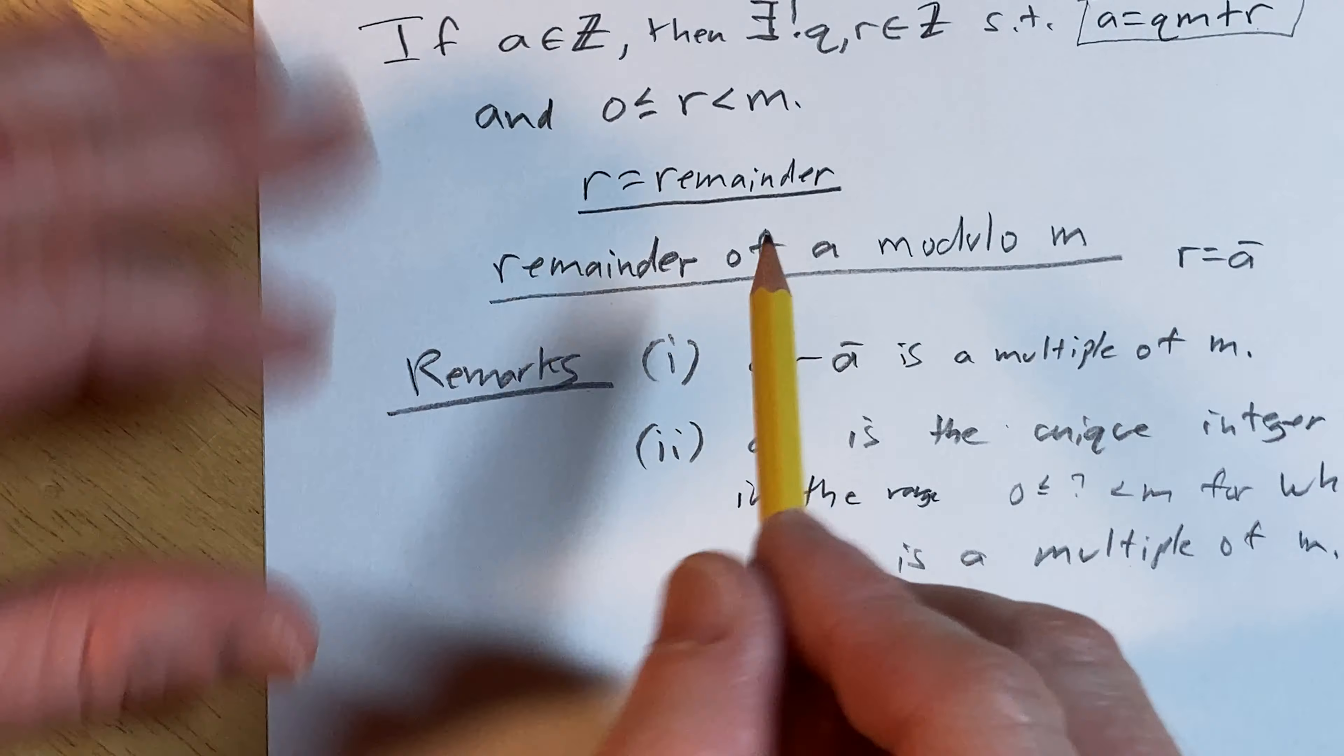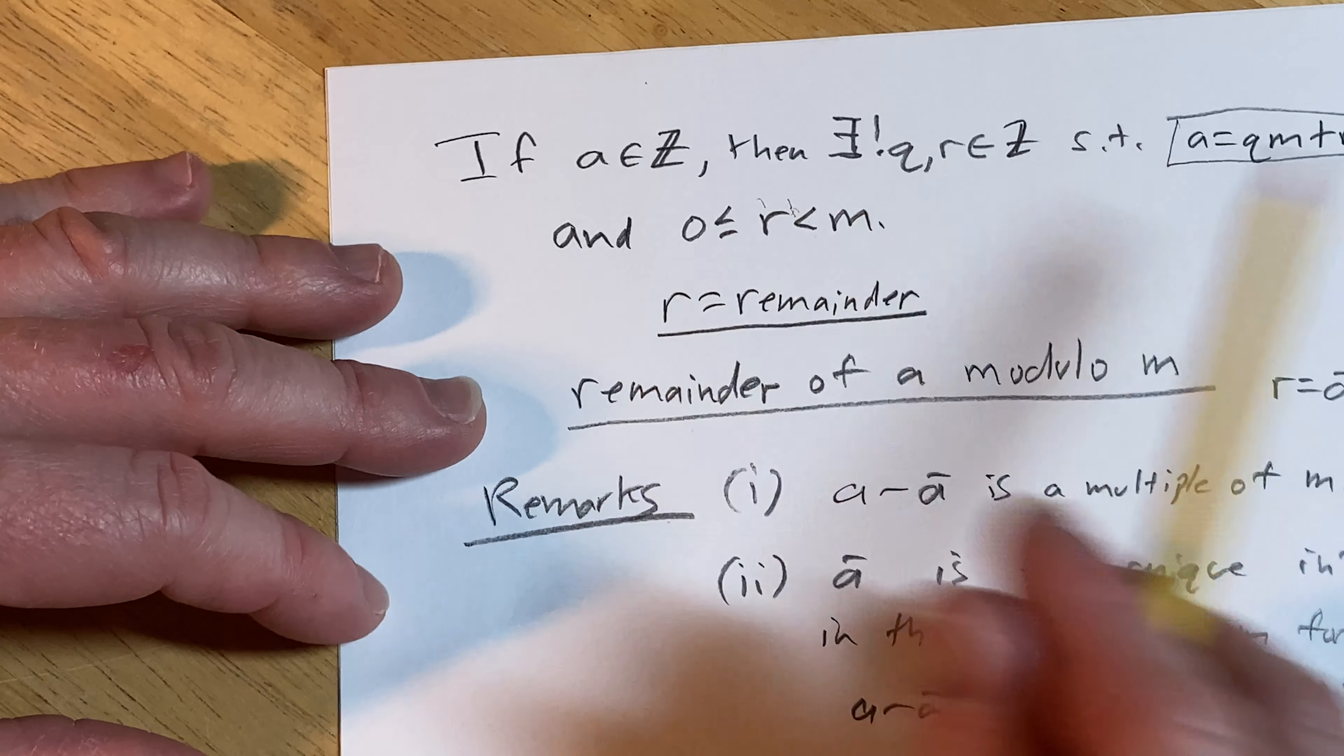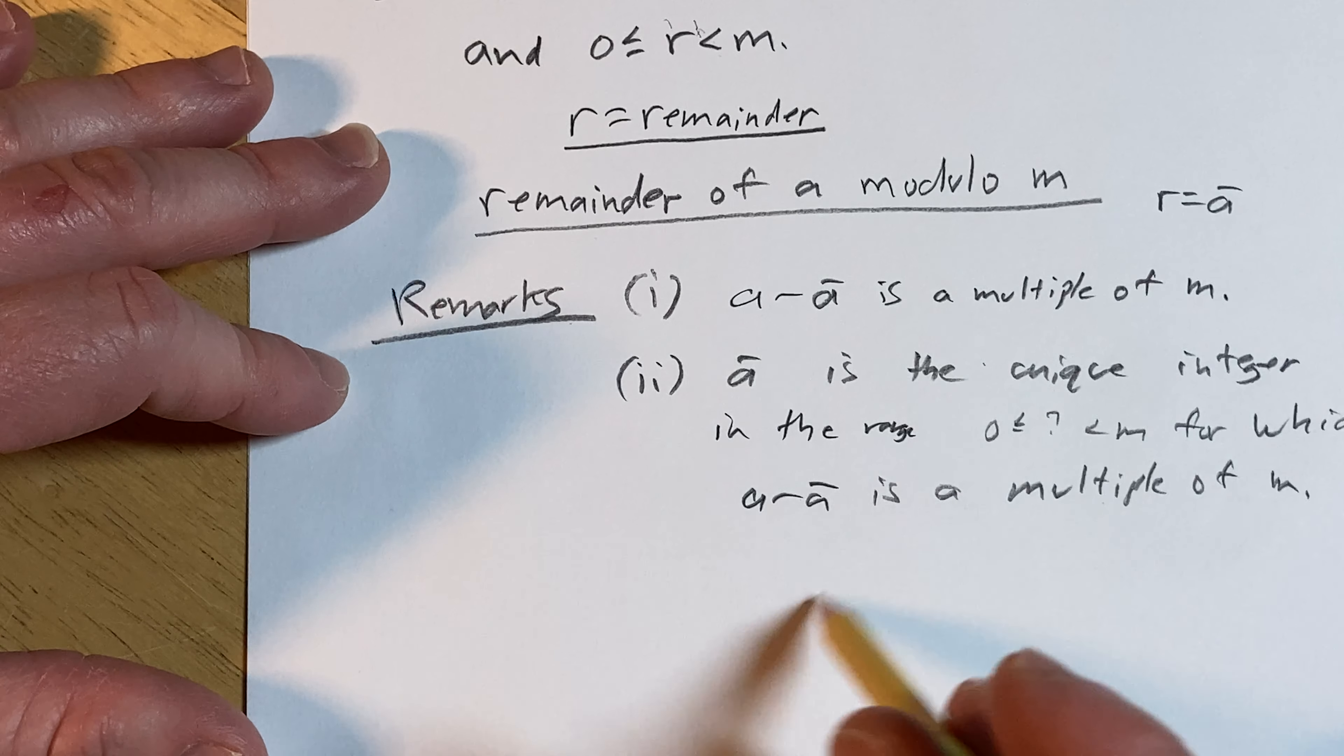And this is by uniqueness, right? Because we have uniqueness. This is an existence and uniqueness theorem. The division algorithm is an existence and uniqueness theorem.